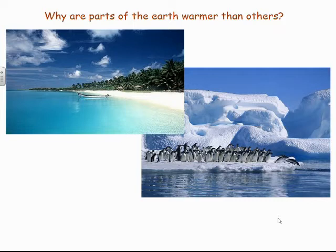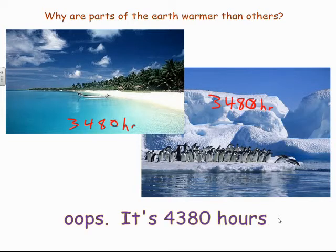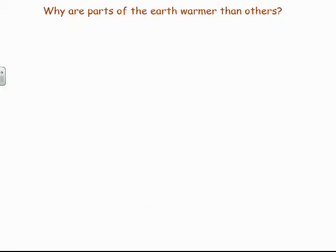But why do these places on Earth have such temperature differences? It turns out they get the same number of hours of sunshine. The thing that's different is the heat — the light from the sun, that insolation from the sun, is going to be hitting at a different angle. So we're going to focus on how the angle of insolation changes at different places on the Earth, and also how it changes at different times as well.